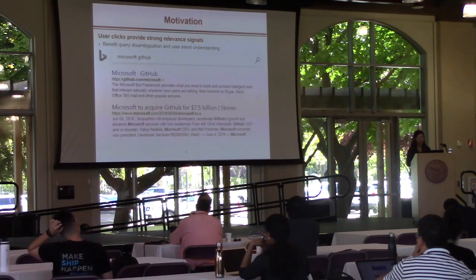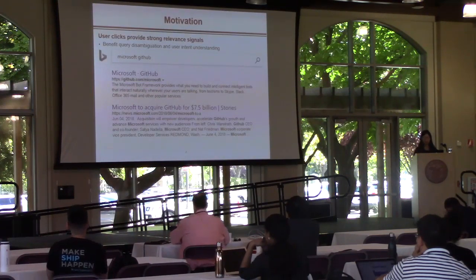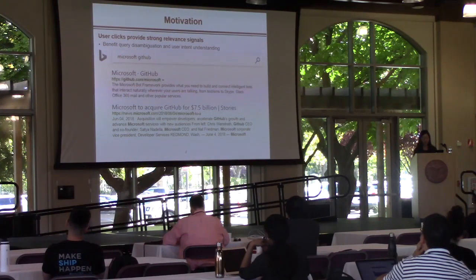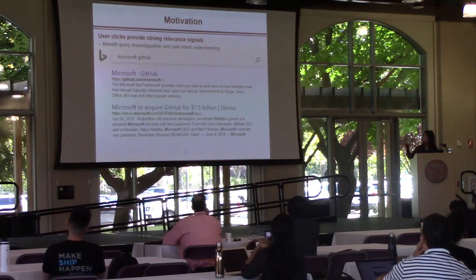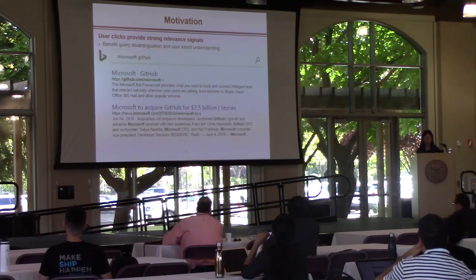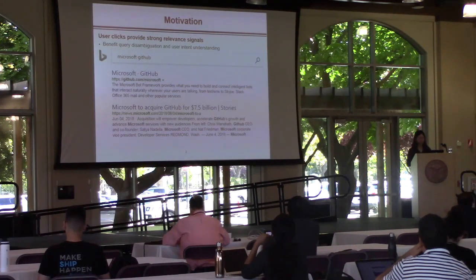As we know, user clicks provide strong value signals which benefit prior identification and user intent understanding. For example, when a user inputs 'Microsoft' and 'GitHub' into a search engine, he or she may want to find the GitHub website itself or read news about the acquisition. In this situation, the user click could help us know which document is the right document.